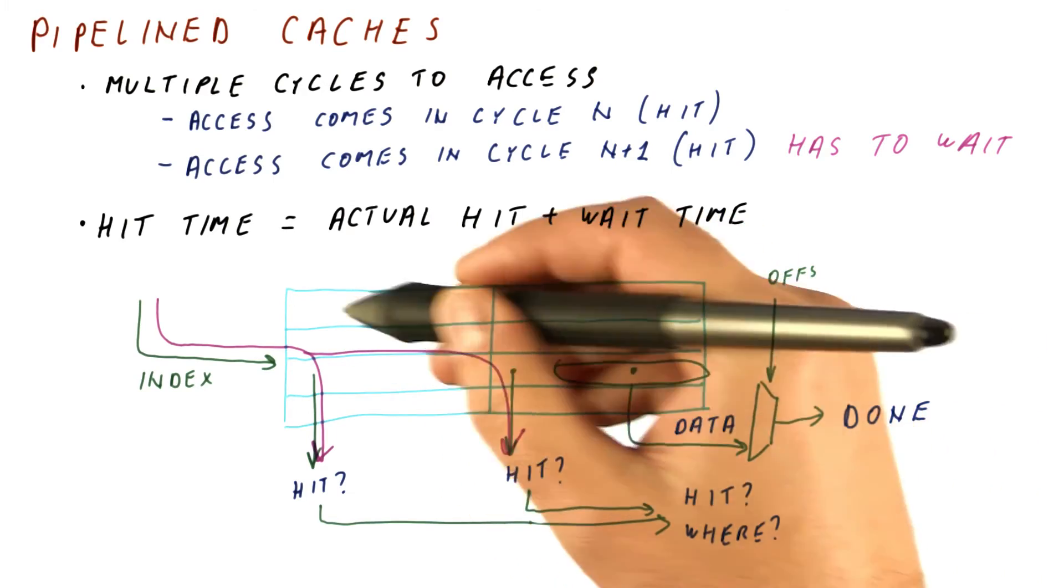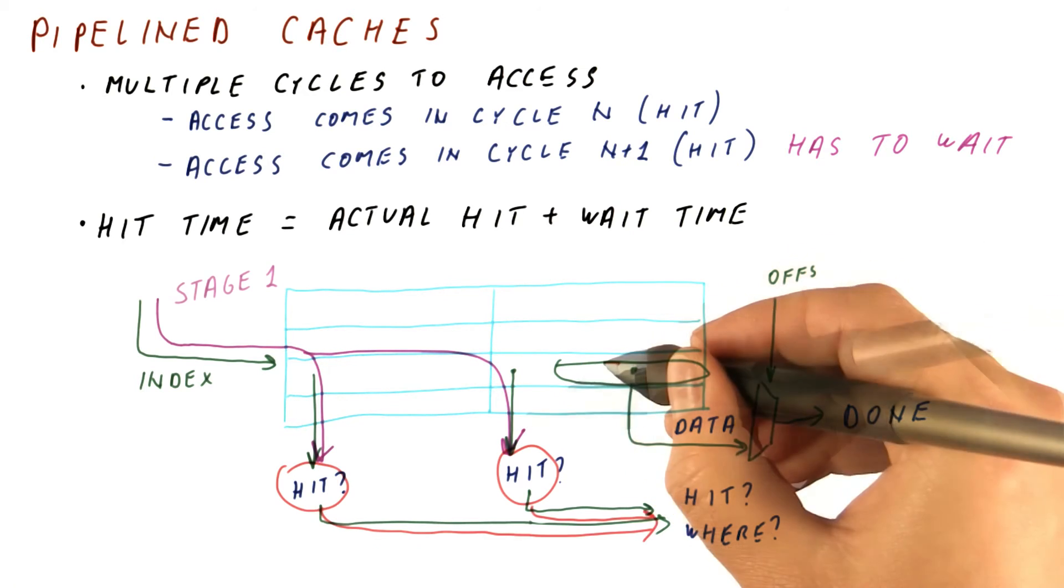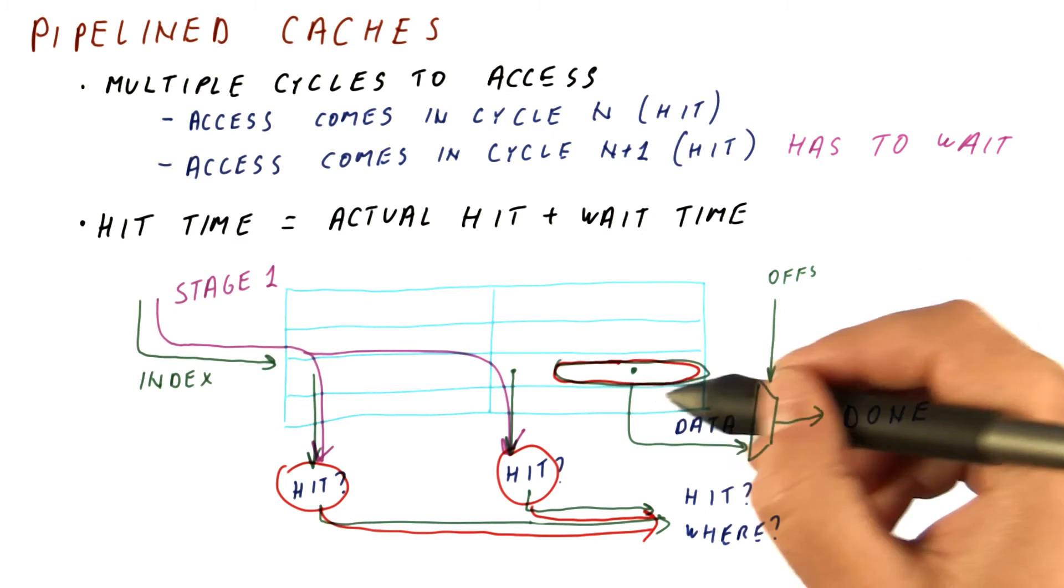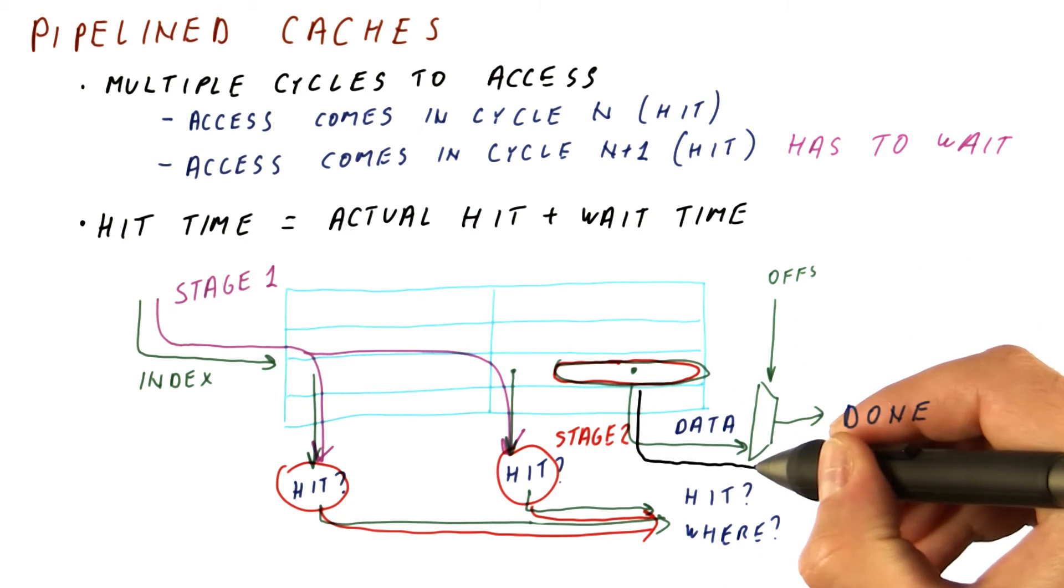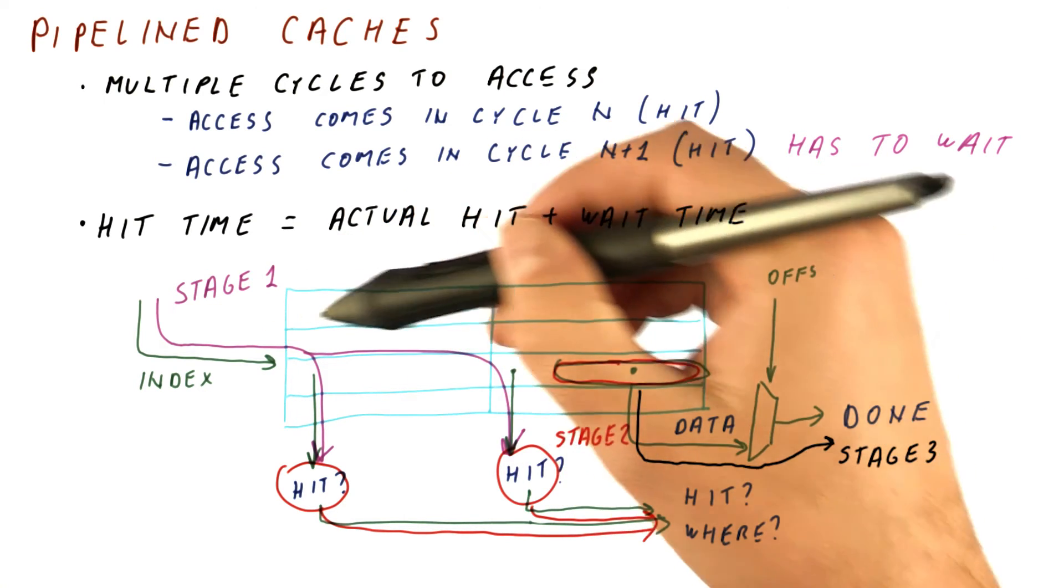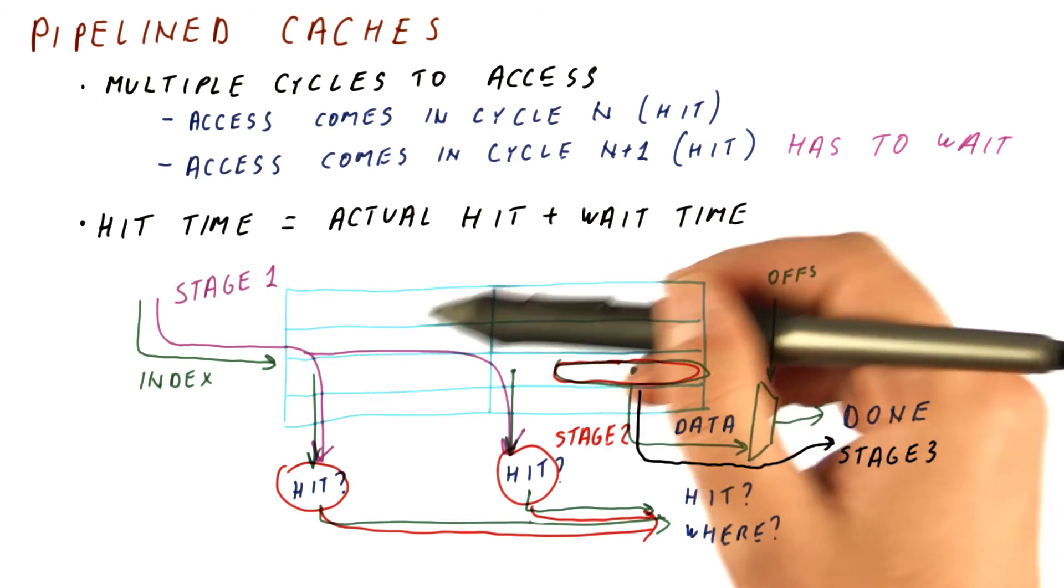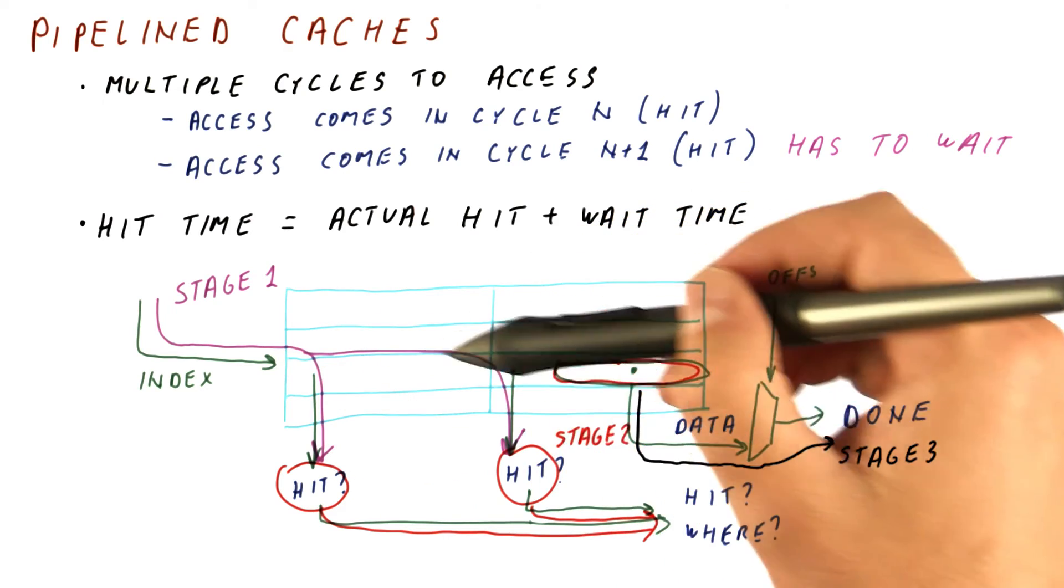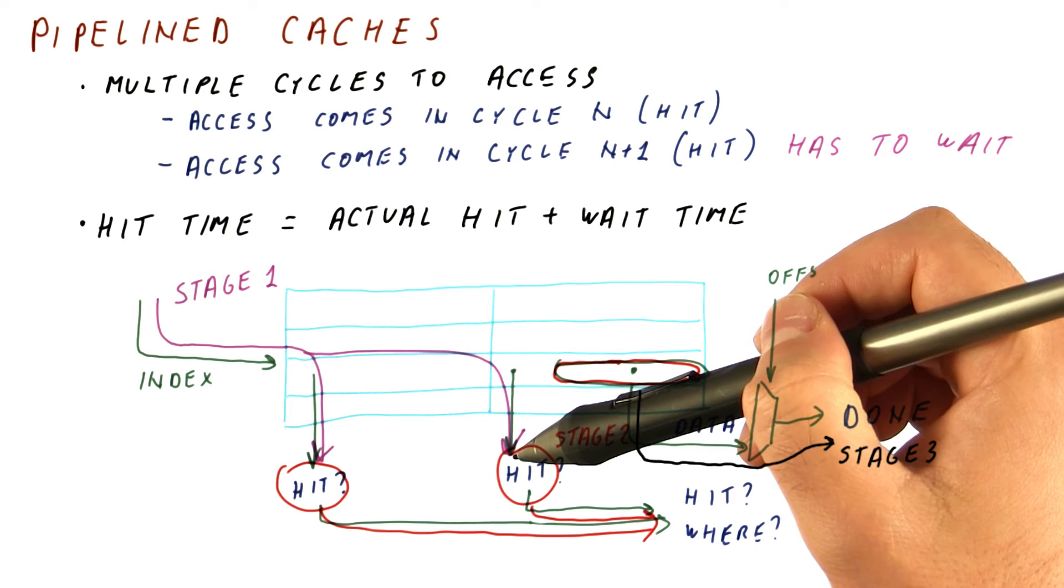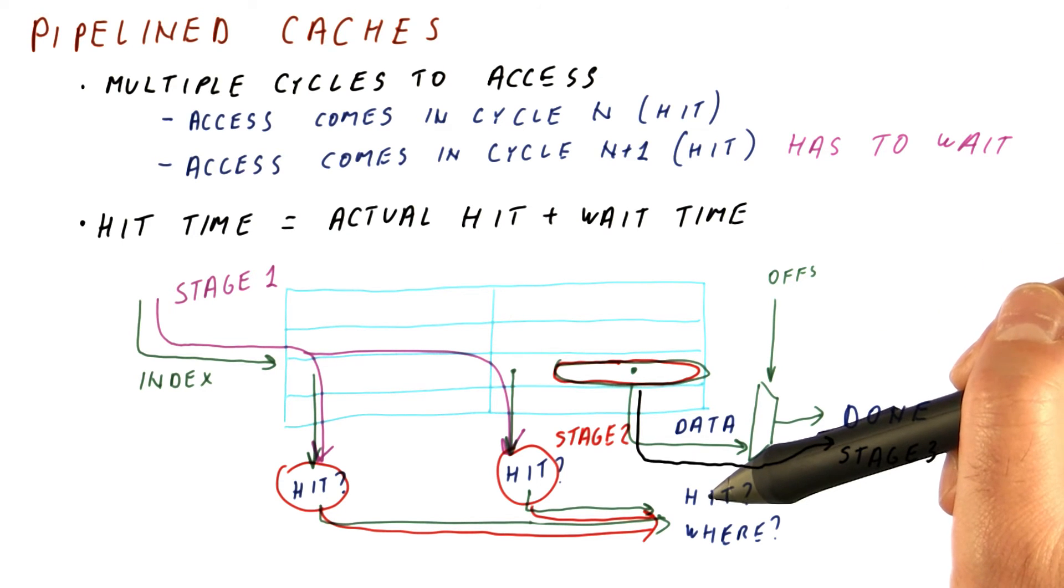So one example of a cache pipeline would be to have this part, reading out the tags and so on from the cache array, be stage one. Determining the hits and beginning the data read would be stage two, and finishing the actual data read all the way to getting the data would be stage three. So as you can see, we can pipeline the cache access even if we don't know how to actually break down the reading from the cache array. Especially if the tags and the valid bits are read before we determine the hit, and we only read the data part of the cache after we determine the hit.